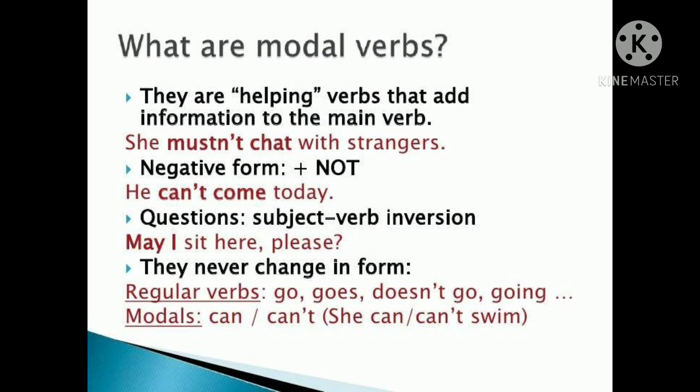For example: 'She mustn't chat with strangers.' The negative form will have 'not' included with can, may, should and must. In question forms, we place the modal verb before the subject. So the question might become: 'Can I sit here?' If I want to be more polite, I would say: 'May I sit here, please?' and end the statement with a question mark.